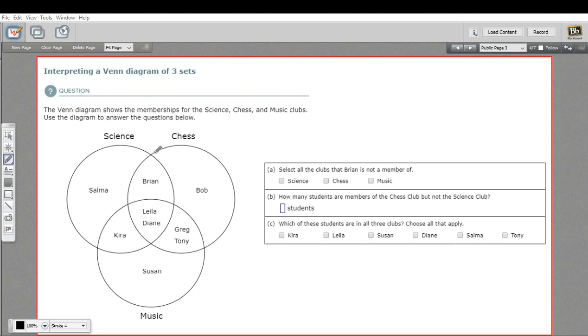So in this particular diagram, we have three circles. The first one is a science club circle, and the second one is a chess club circle. And then finally, a music club circle.